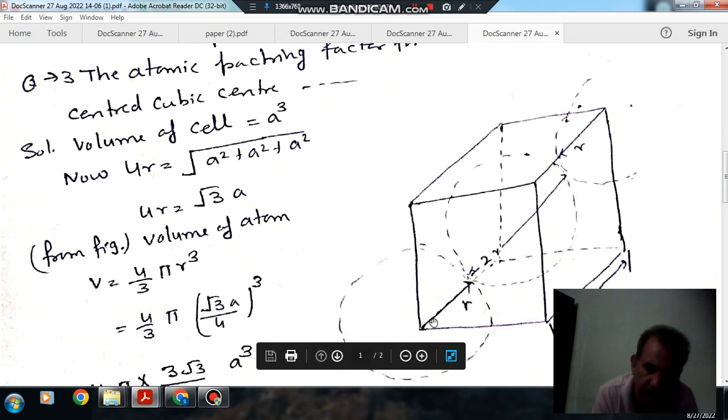Eight corner atoms, one central atom. And suppose this is a unit cell of dimension A.